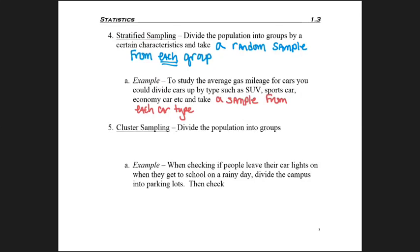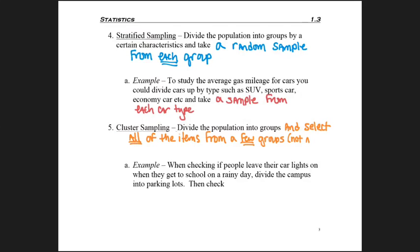A fifth method of sampling would be cluster sampling. It starts off looking the same way — you still divide the population into groups — but here, you would then select all of the items from a few of the groups, but not all of the groups.